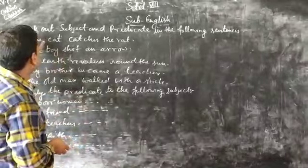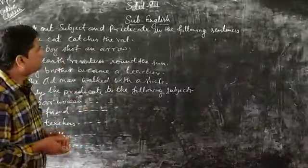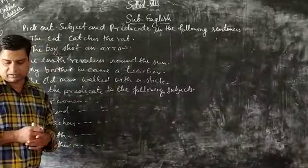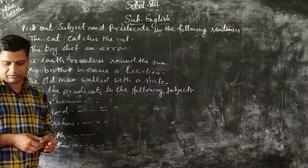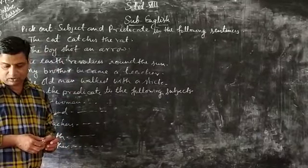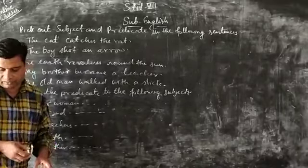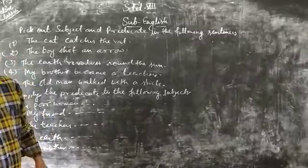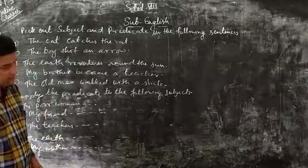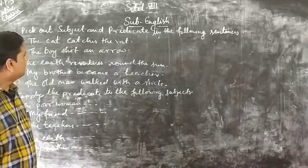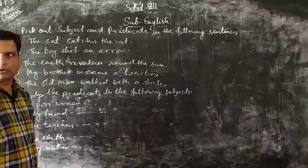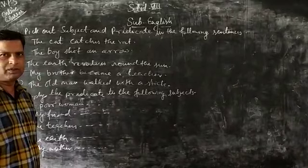Now I will tell you what is subject. A subject is a word or phrase in a sentence that says who or what is doing something. And the predicate is that part of a sentence which tells about the subject.